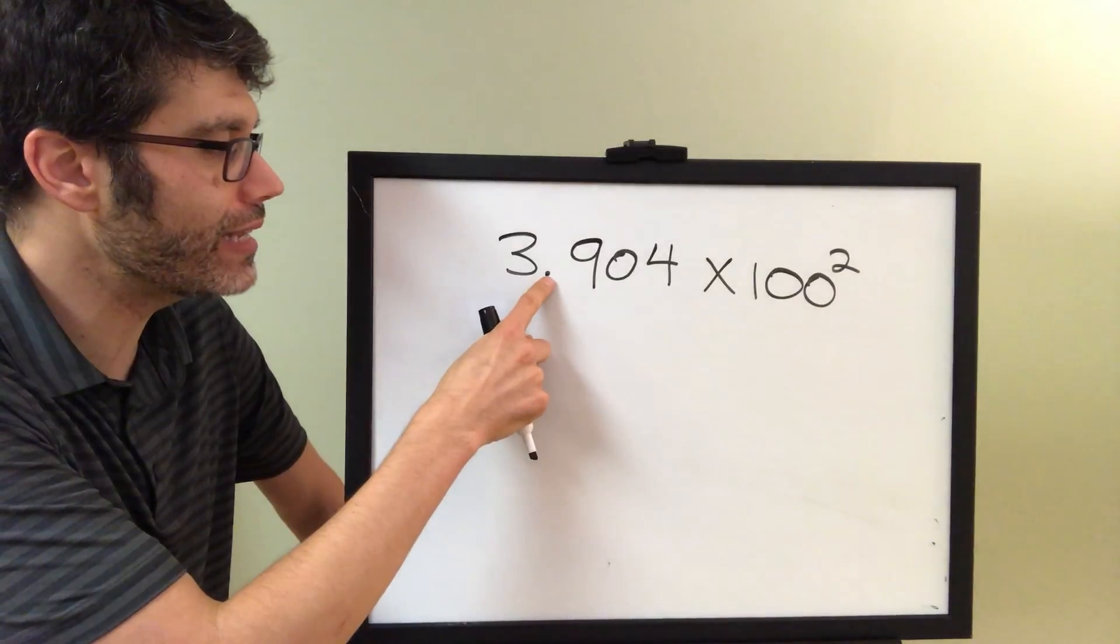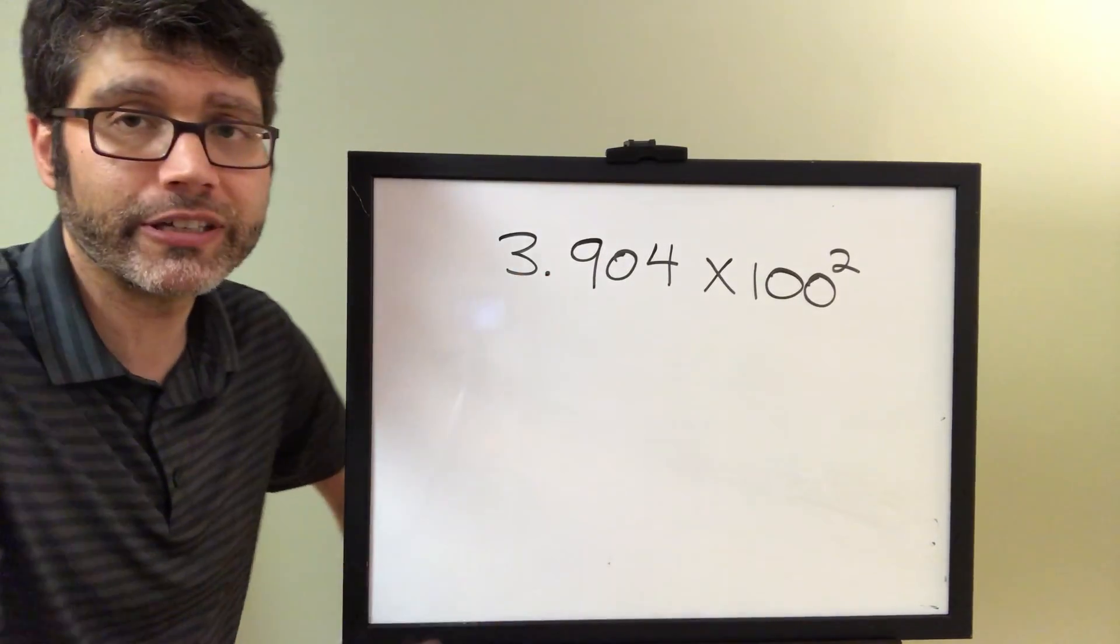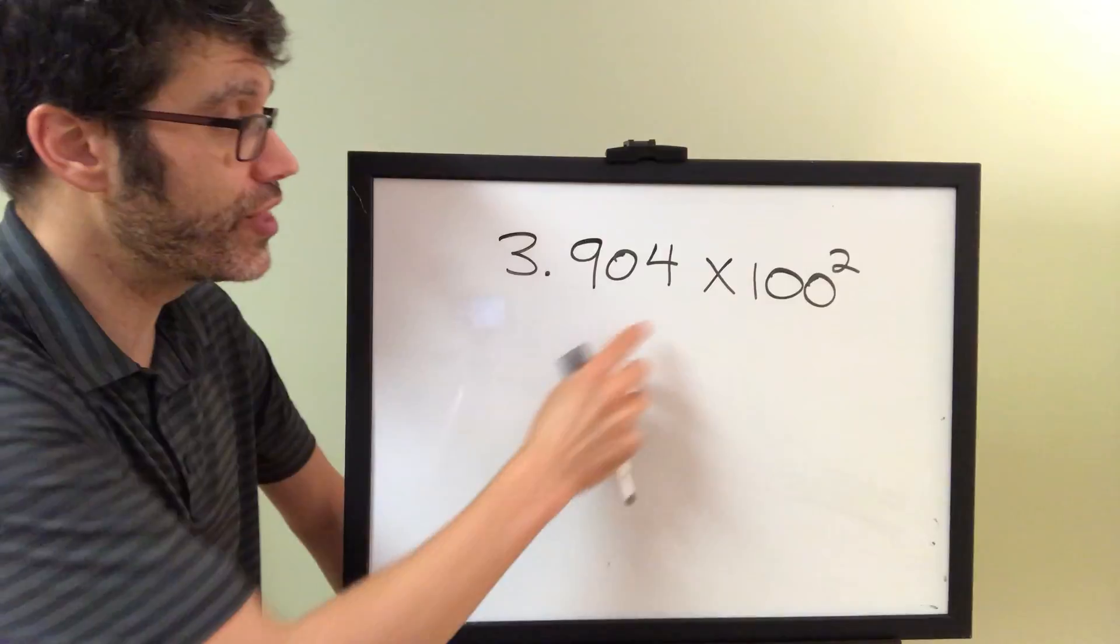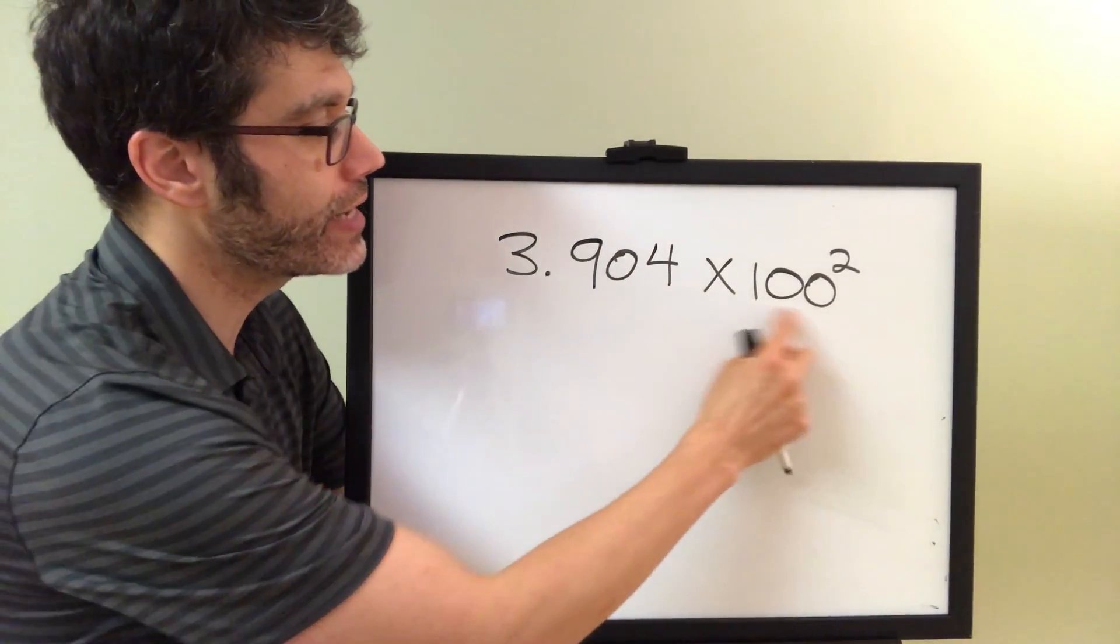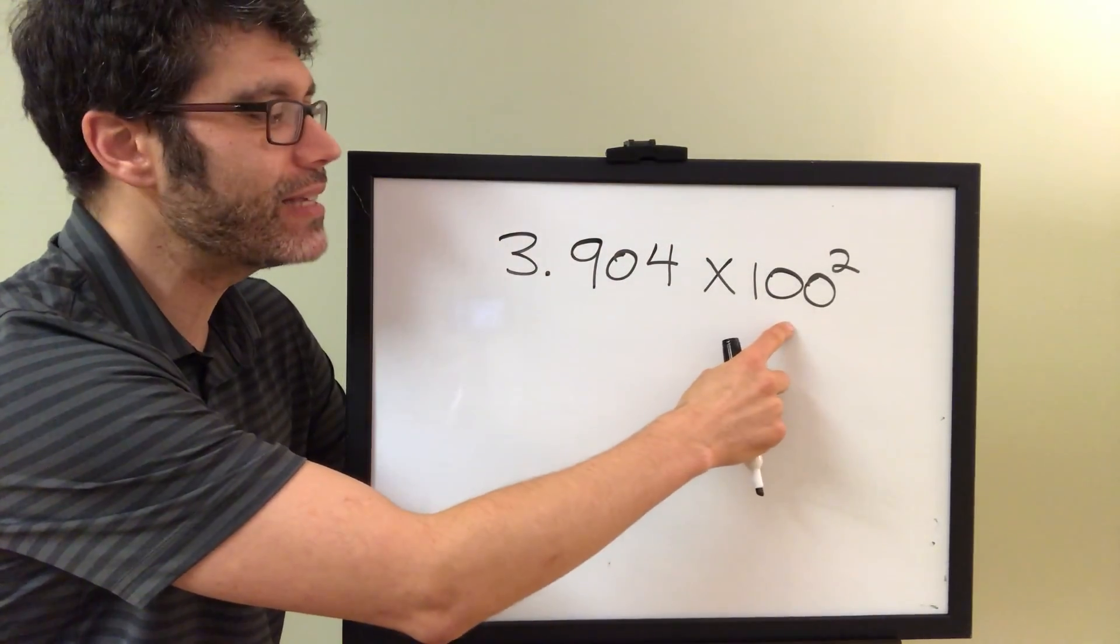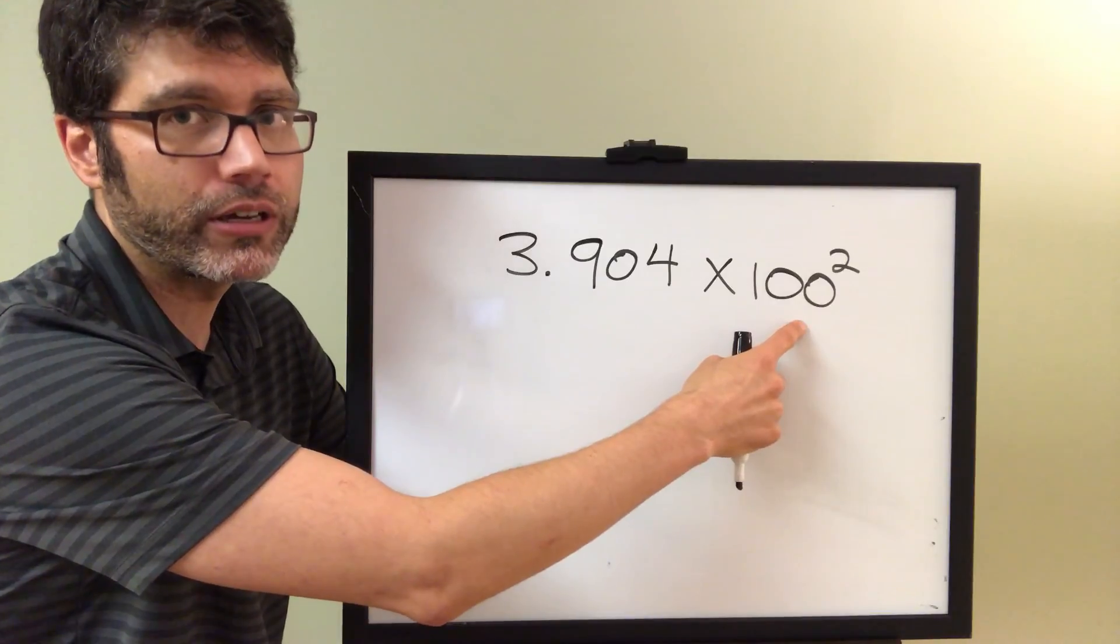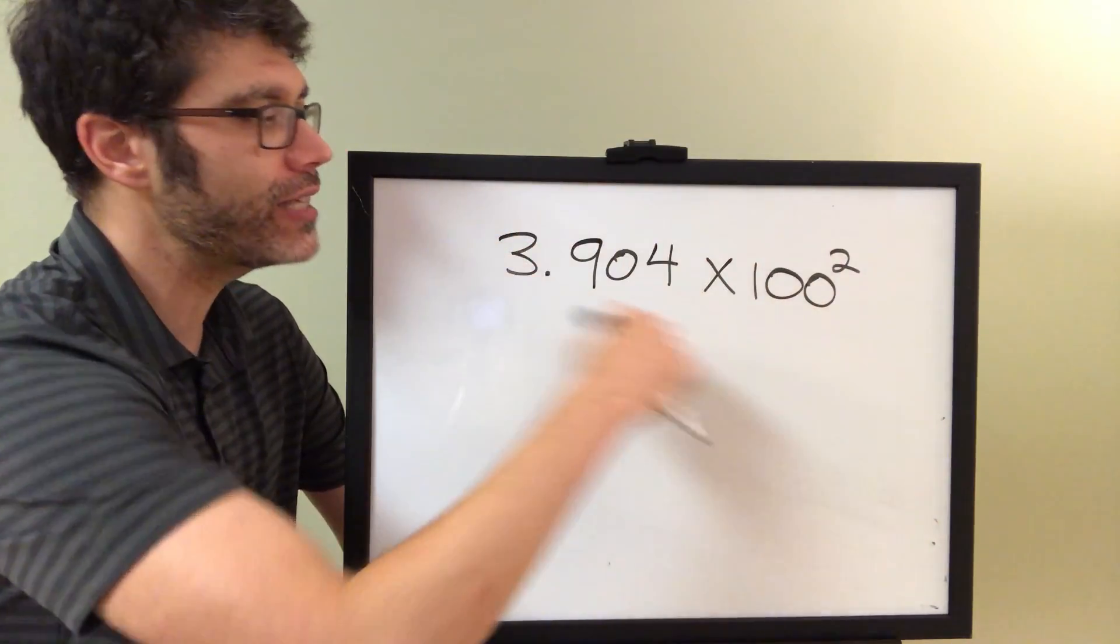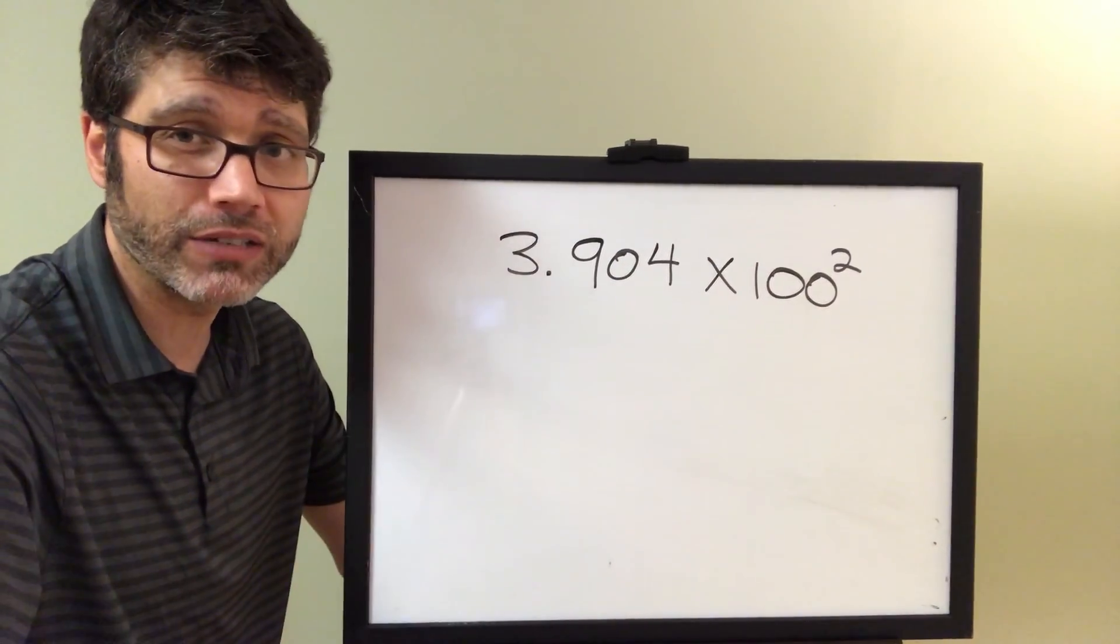Well, the decimal point only has one digit to the left of it. Okay, so this coefficient is fine. How about over here? Ah, we need a base of 10, not a base of 100. So let's try to get this back into proper scientific notation.